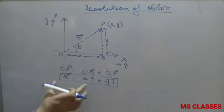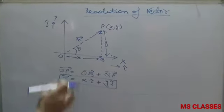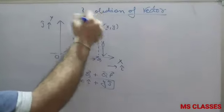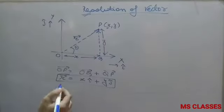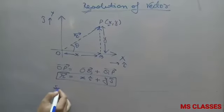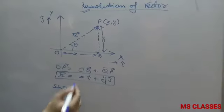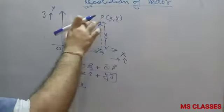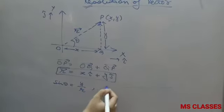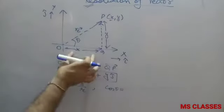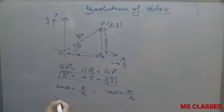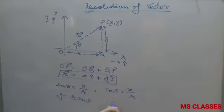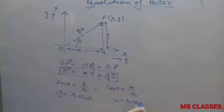Coming to resolution, from the same diagram we can get sine theta and cos theta. Sine theta is perpendicular upon hypotenuse, which is y upon r. Cos theta is base upon hypotenuse, which is x upon r. So y equals r sine theta and x equals r cos theta.